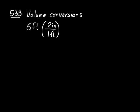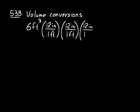What if we wanted to convert 6 feet squared to inches squared? We'd need 2 of the same unit multiplier: 12 inches per foot, times 12 inches per foot — that's a conversion of area. For volume, to convert 6 cubic feet to cubic inches, we need a third conversion factor: 12 inches over 1 foot. Because feet cubed is feet times feet times feet, we need 3 factors to convert from feet cubed to inches cubed.